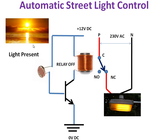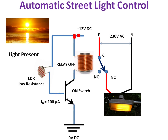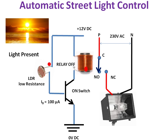During daytime, when light falls on the LDR, its resistance becomes reduced. This causes current to flow through the LDR, so IB equals 100 microamperes. When a high base current is applied, the transistor acts as an on switch, allowing current to flow from collector to emitter. The relay turns on, and the switch is transferred from NC to NO position, so the street light turns off.